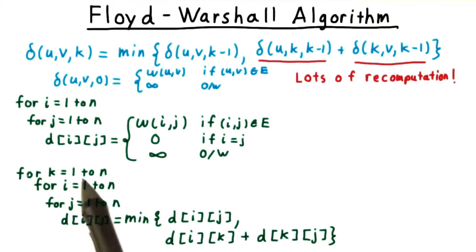Then we add potential intermediate vertices one by one in this outer loop here. For each source destination pair, we account for the possibility of using k as an intermediate vertex with this update equation.